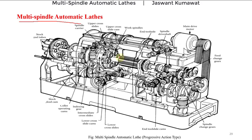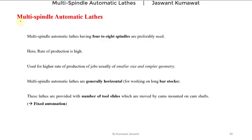On the basis of our discussion we can point out certain features of these multi spindle automatic lathes. Multi spindle automatic lathes having four to eight spindles are preferably used.